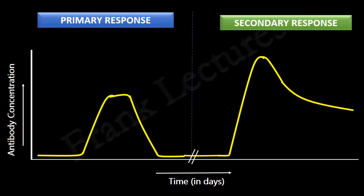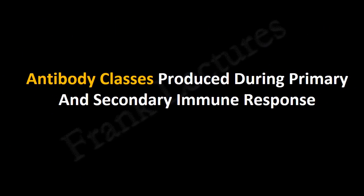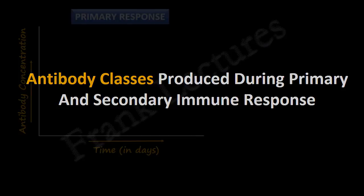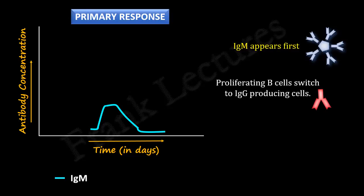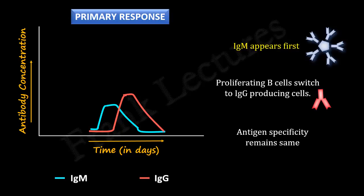Here you can compare the primary and secondary antibody responses. In the primary antibody response, IgM appears first. These antibodies can directly bind to the foreign antigen. Since IgM is a pentameric molecule, it is an efficient antibody in the initial stage of infection. Meanwhile, cytokines trigger proliferating B cells to switch from IgM-producing plasma cells to IgG or some other immunoglobulin class-producing plasma cells — note that only the class of antibody changes, not the antigen specificity. As IgM production declines, IgG production speeds up, and finally, at the end of the primary antibody response, the concentration of IgG also declines.